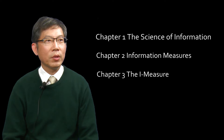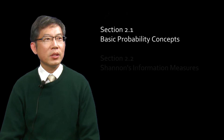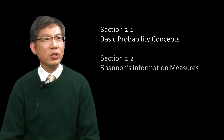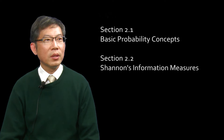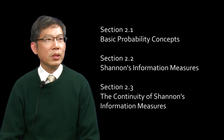Chapter 2 and Chapter 3 are the foundation chapters of the whole course. This week we will cover the first three sections of the chapter. Section 2.1 will be a review of some basic probability concepts. Section 2.2 introduces Shannon's Information Measures, which are fundamental measures that will be used throughout the course. Section 2.3 is a short section discussing the continuity of Shannon's Information Measures.